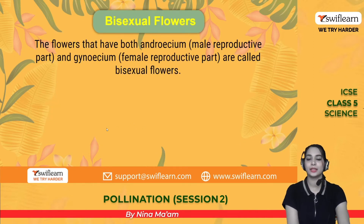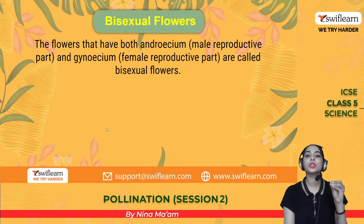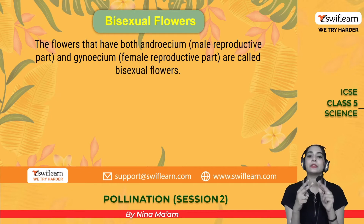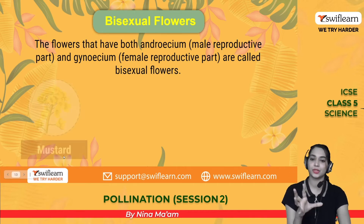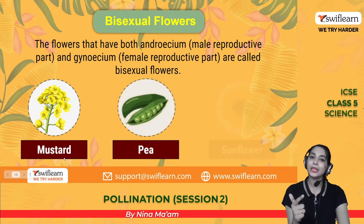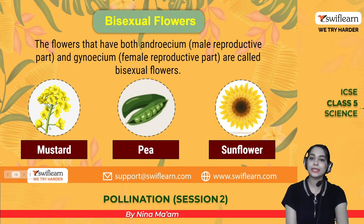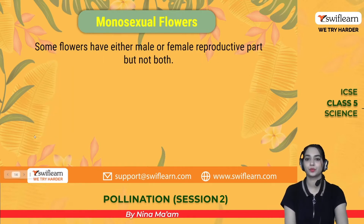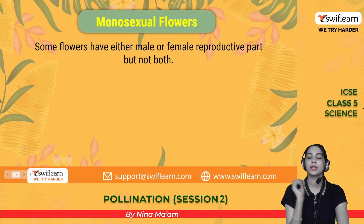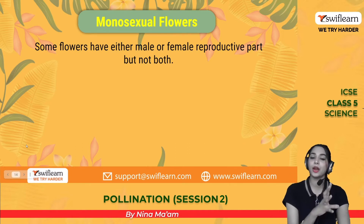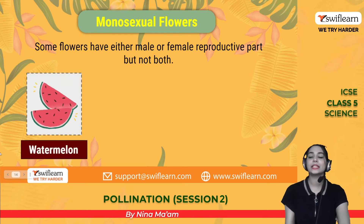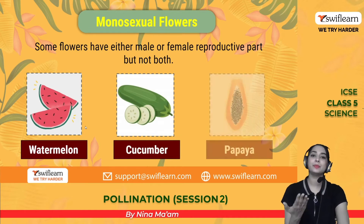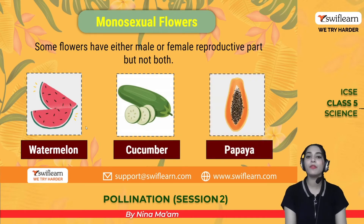Bisexual flowers have both androecium and gynoecium — that is, both male and female reproductive parts are present. Examples are mustard, pea, and sunflower. Monosexual or unisexual flowers have either the male or female reproductive part, but not both. Examples of monosexual flowers are watermelon, cucumber, and papaya.